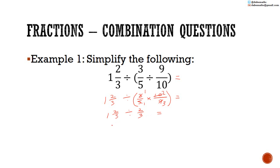Which is the same as 1 and 2 thirds multiplied by 3 over 2. Converting: 1 and 2 thirds equals 1 multiplied by 3 is 3, plus 2 is 5, giving 5 over 3. So 5 over 3 multiplied by 3 over 2. Cancel: 3 into 3 is 1 and 3 into 3 is 1. So we get 5 multiplied by 1 is 5, and 1 multiplied by 2 is 2.